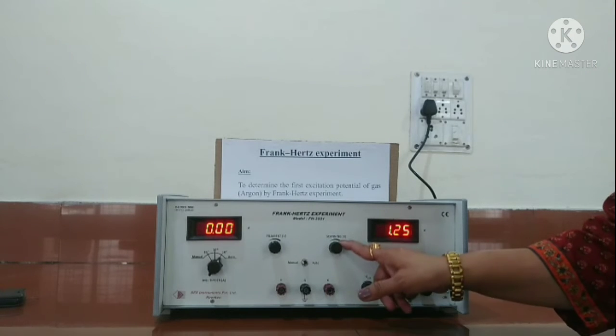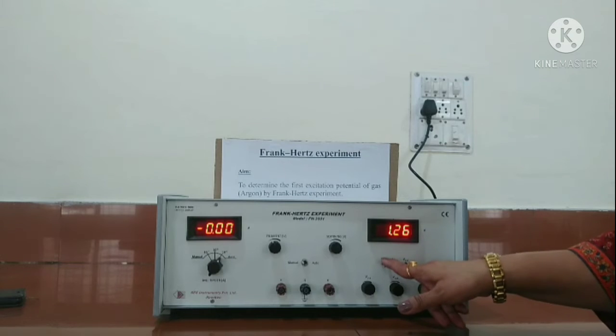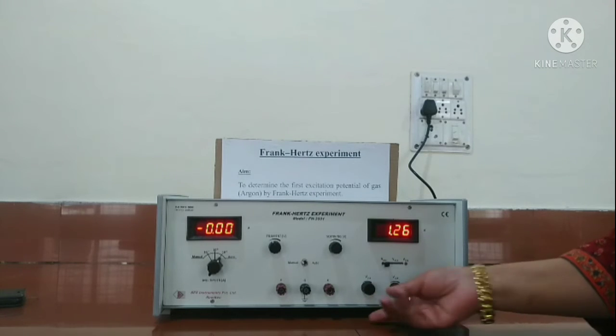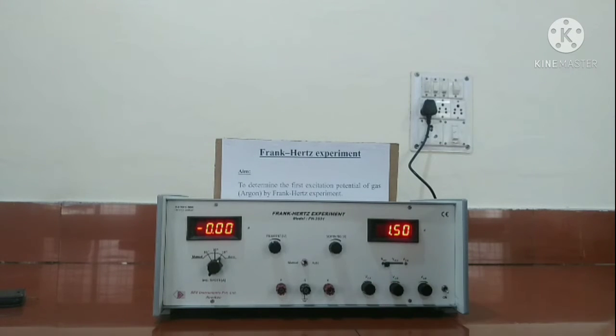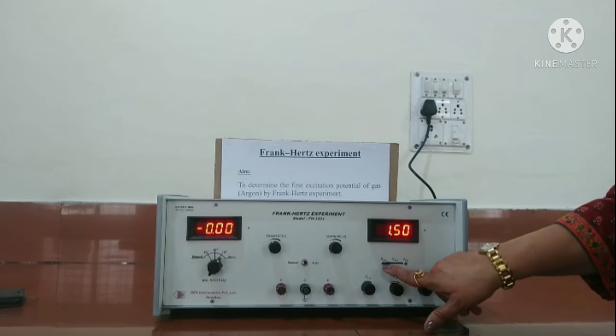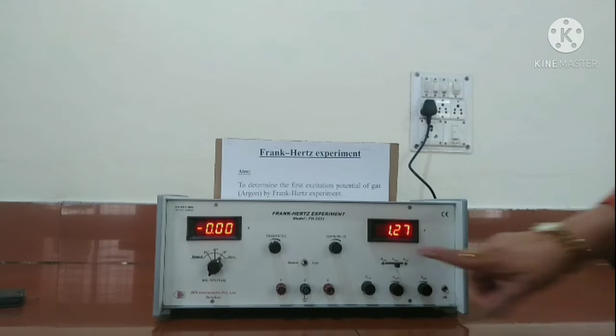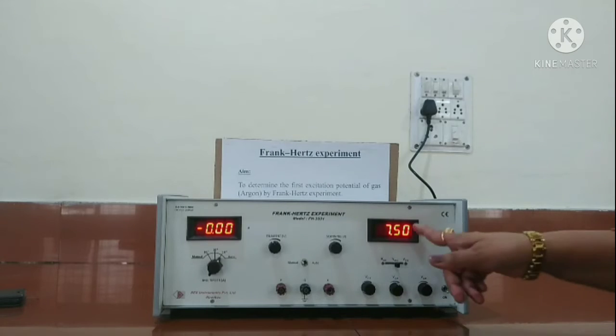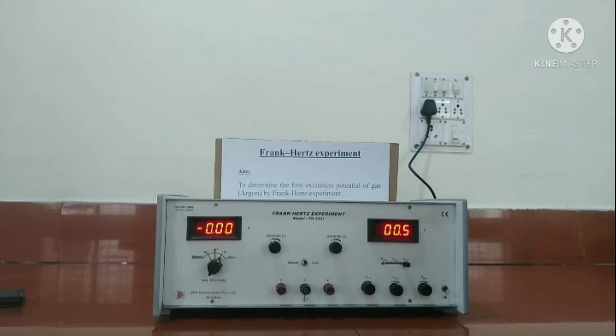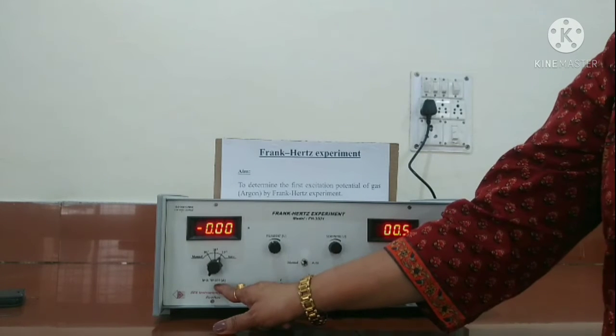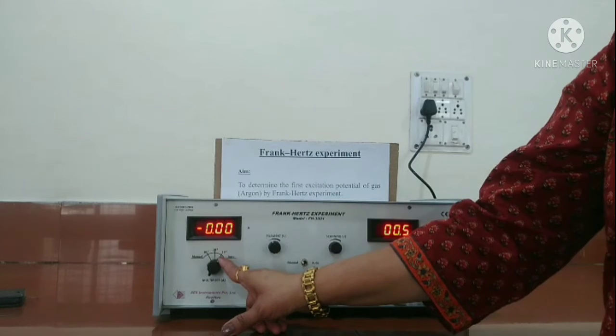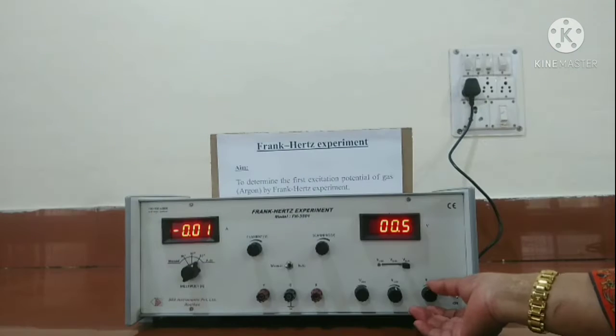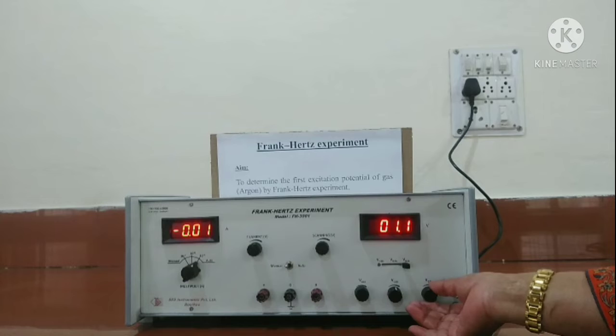Then we set the G1K voltage, which is kept as 1.5 volts. Then we will flick it to the G2A, and this will be kept as 7.5 volts. These are the suggestive values. Then we keep it to the VG2K voltage and then increase it by very small amounts and keep on noting down the current. We can set the multiplier to 10^-8.